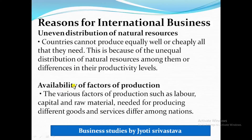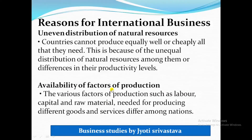The second reason for international business is the availability of factors of production. Factors of production are land, labour, capital, and raw materials. The various factors of production needed for producing different goods and services differ among nations. For example, if I want to start a restaurant business and need an ingredient that is only available in South Korea or America, I would have to import it. Certain factors of production that are not available here must be imported from other nations.